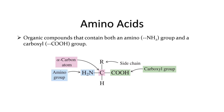Proteins are macromolecules that make up living organisms. But like carbohydrates, they are made up of smaller building blocks known as amino acids. Here you can see the general structural formula of an amino acid. An amino acid is an organic compound that contains both an amino group and a carboxyl group.